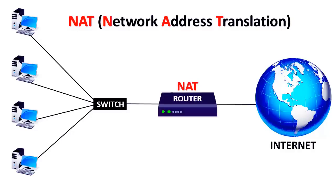Here, all 4 computers are assigned with private IP addresses such as 10.0.0.1, 10.0.0.2, 10.0.0.3, and 10.0.0.4. These private IP addresses are not routable on the internet. It means the same address can be used an unlimited number of times on different networks. I have created a separate post on what is private and public IP address — if you want to know more, follow the link given in the description section below.